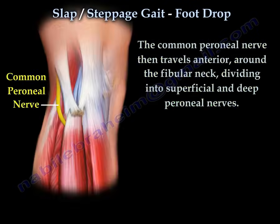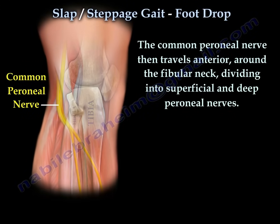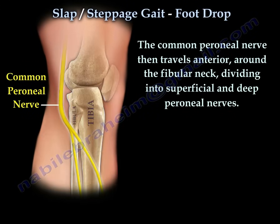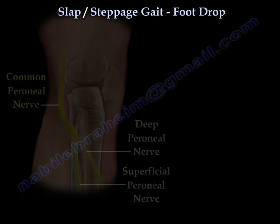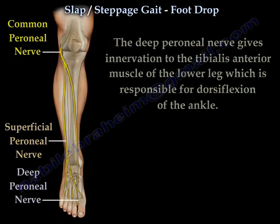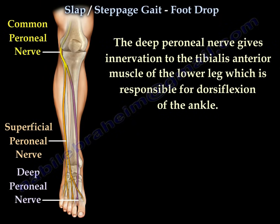The common peroneal nerve then travels anterior around the fibular neck, dividing into superficial and deep peroneal nerves. The deep peroneal nerve gives innervation to the tibialis anterior muscle of the lower leg, which is responsible for dorsiflexion of the ankle.